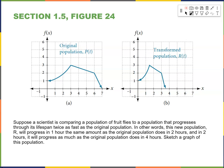Looking at the population example, the transformed population is a horizontal compression where all input values are half of the original distance from the vertical axis. For instance, the point at t equals 7 moves to 3.5, the point at 6 moves to 3, and the point at 3 moves to 1.5. The new population progresses in 1 hour what the original does in 2 hours.